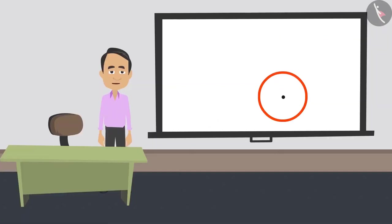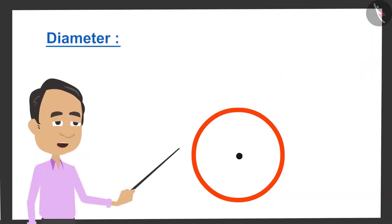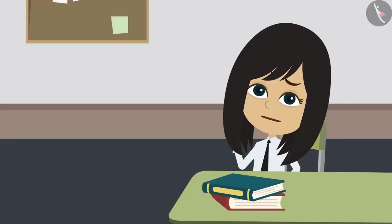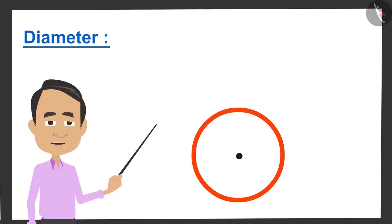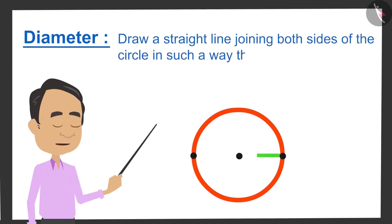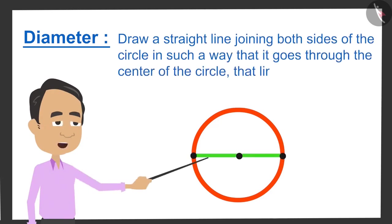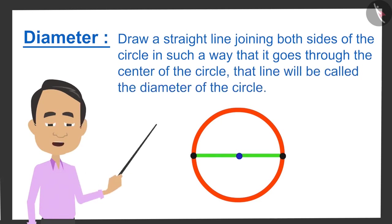All circles have only one center. The second property of a circle is the diameter. What is a diameter? If we draw a straight line joining both sides of the circle in such a way that it goes through the center of the circle, then that line will be called the diameter of the circle.